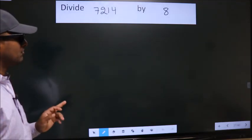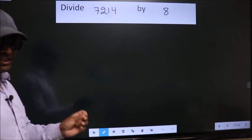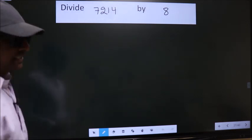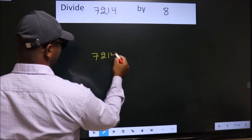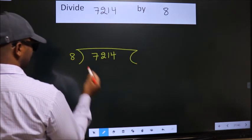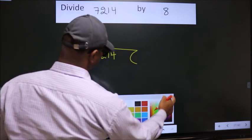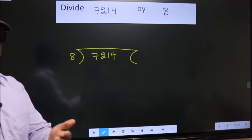Divide 7,214 by 8. To do this division, we should frame it in this way. 7,214 here, 8 here. This is your step one.